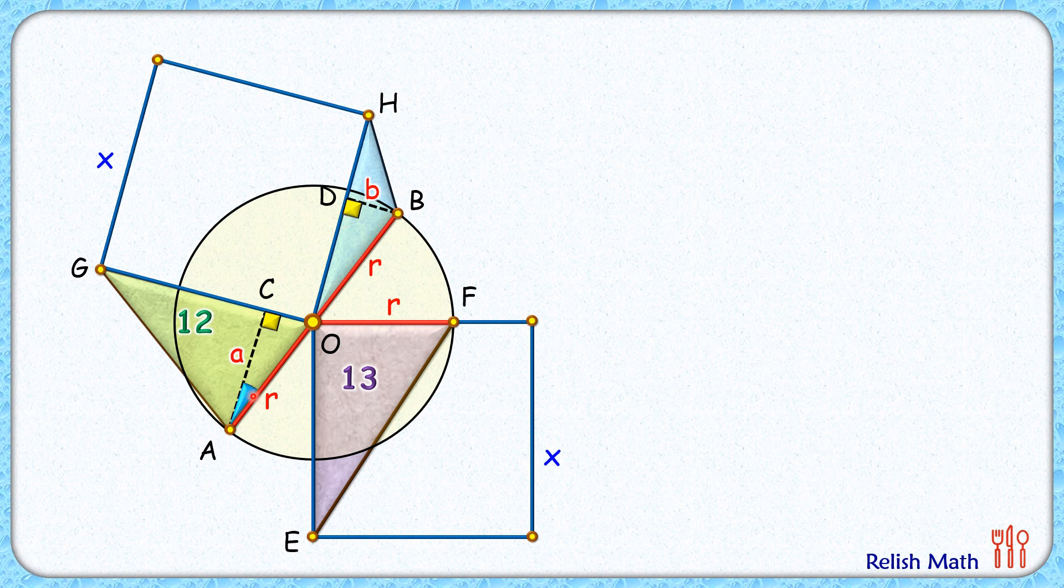Now this angle here if we'll assume this as an alpha degree then this angle that will become beta degree and both will be complementary angles. Now this angle here is 90 degrees and if we'll check the angle along a straight line we can make out that this angle here will be complementary to this beta degree or this angle will also be alpha degree.